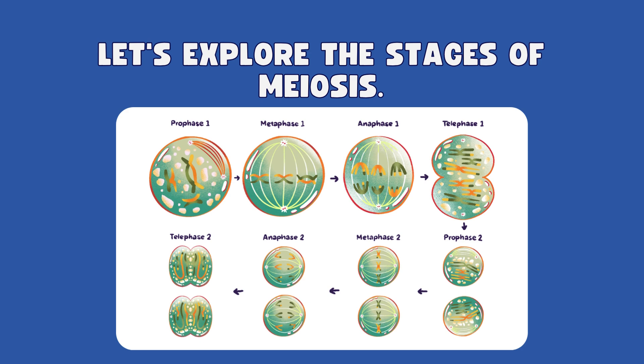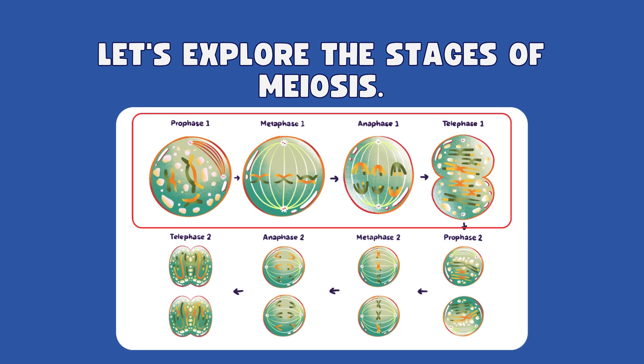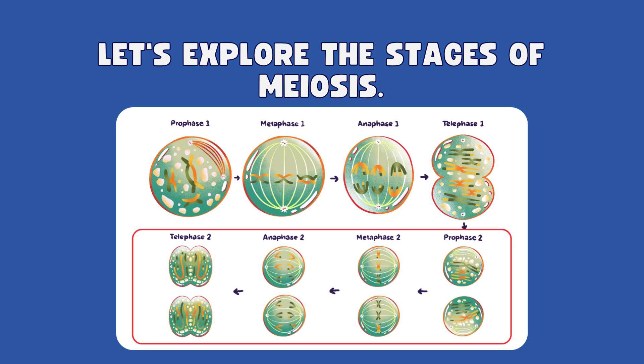Now, let's take a closer look at the various stages of meiosis. The process can be broken down into two main phases: meiosis I and meiosis II.